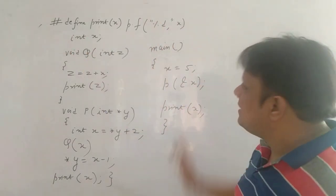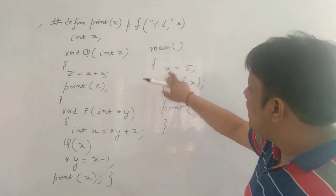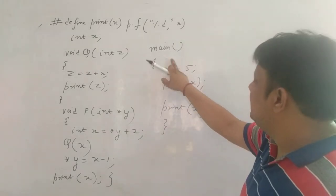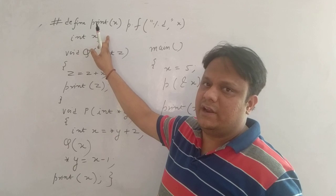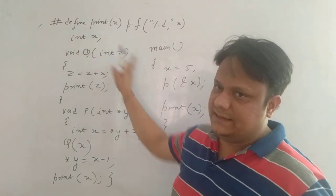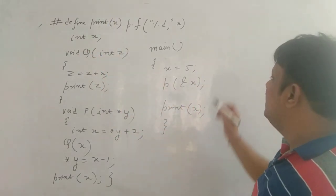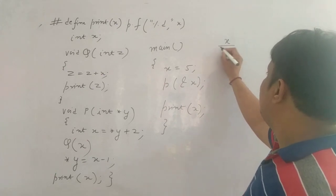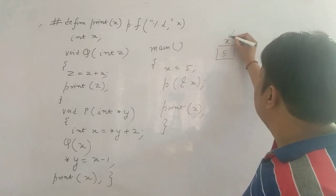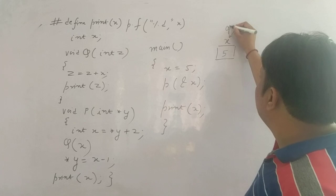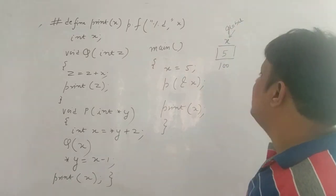Your program starts with main. Main: x is equal to 5. What is the data type of this? It's not mentioned because we have declared a global variable. So this x is this x — it has been declared globally. The value of x is 5. Let's suppose this x, value of x is 5, and it's a global variable — your global x. And let's suppose the address is 100.